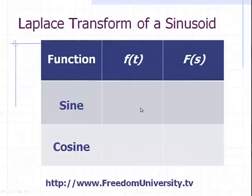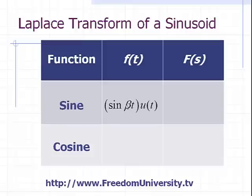So as a summary, here's the Laplace transform of a sine and cosine. So the sine is given by this causal sine function. And its corresponding Laplace transform is beta divided by s squared plus beta squared.